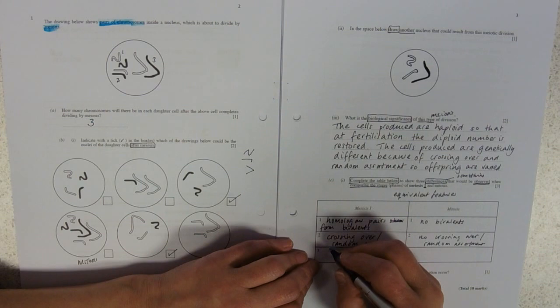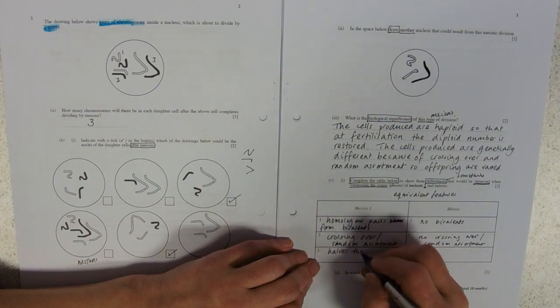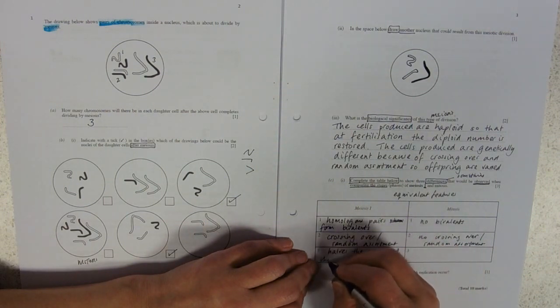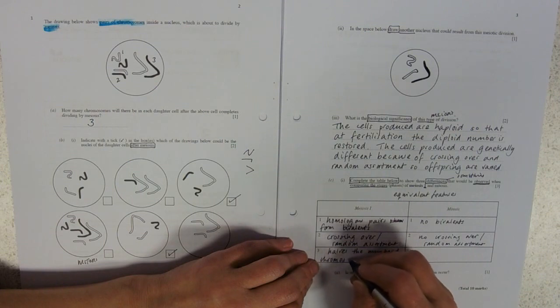Halves. Halves the number of chromosomes. I'm going to put haploid in there again.